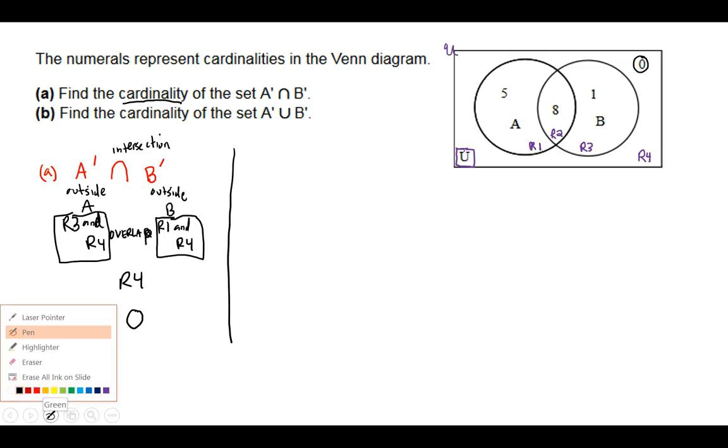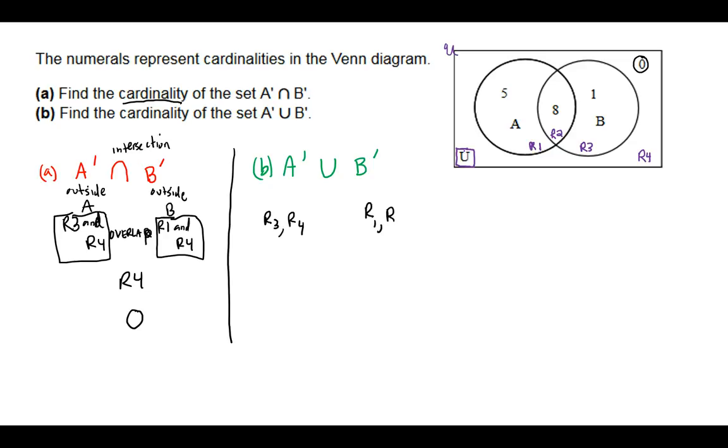And then when it comes to part B, we have the same two sets, but now a different symbol in between. And so, we'll label it a little quicker this time. We have region 3 and region 4, region 1 and region 4, and this time the symbol is union.